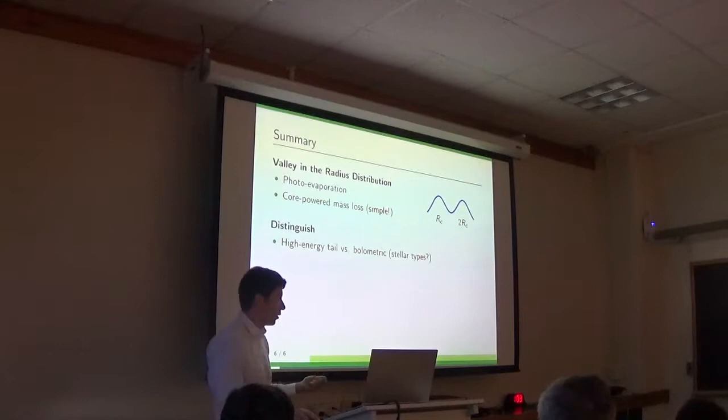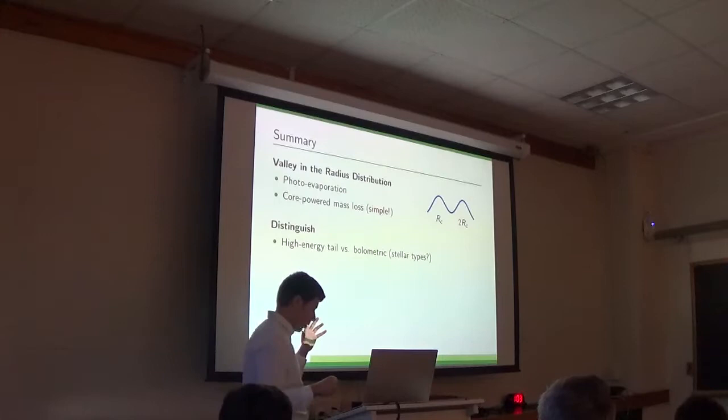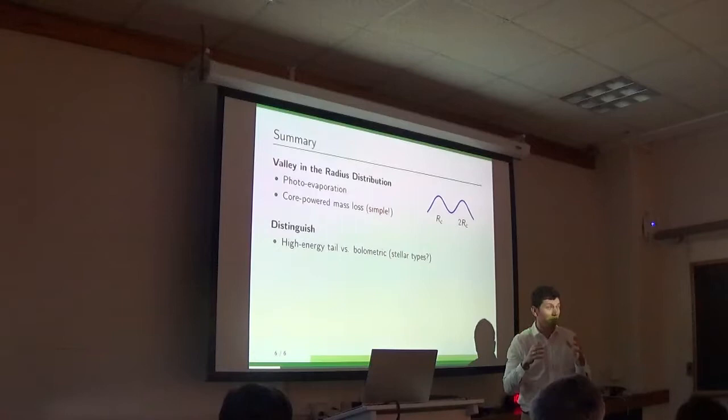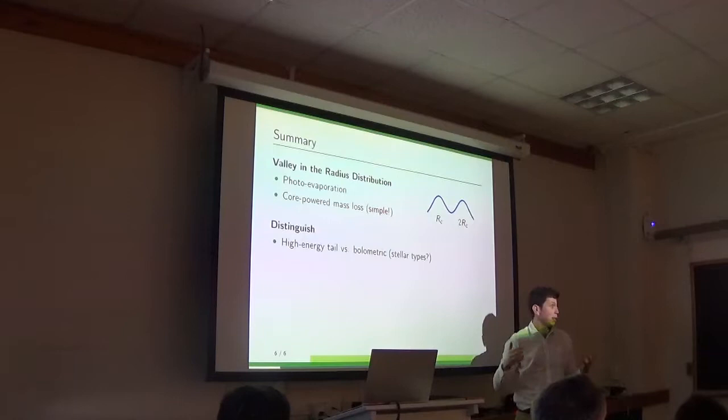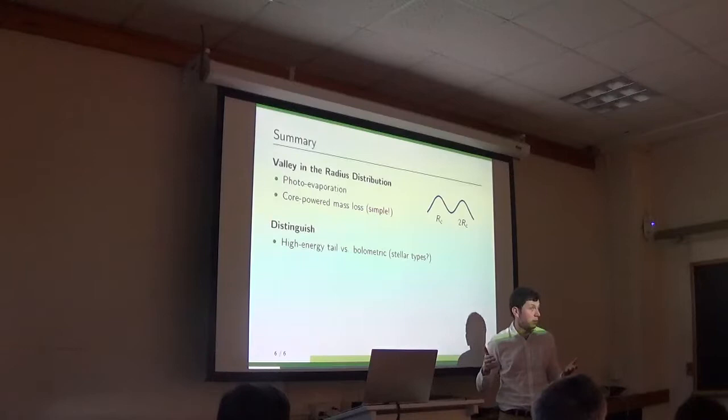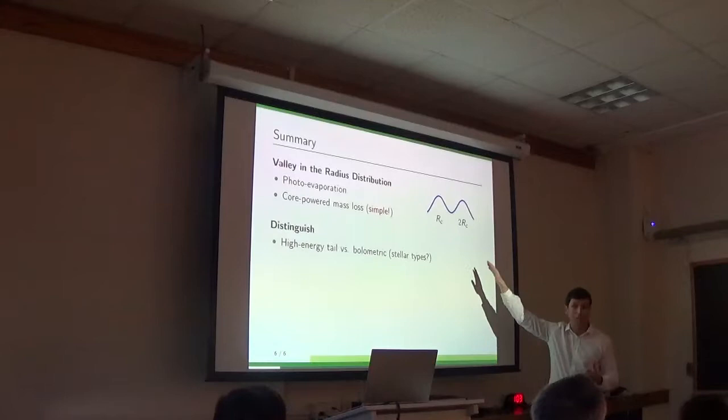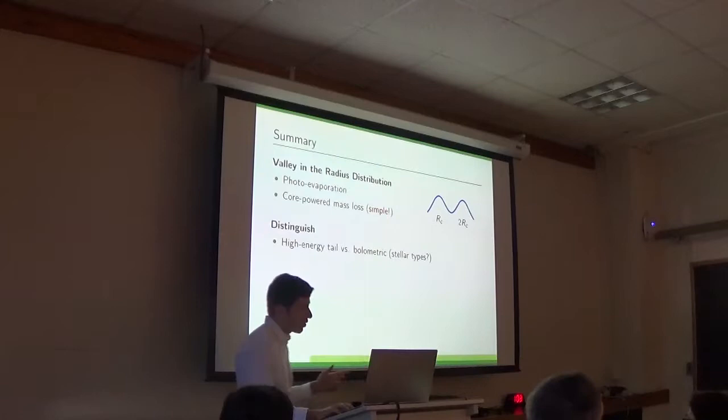The standard theory of what happened to these intermediate atmospheres is that they were photo-evaporated. But I suggested that they were lost due to the cooling luminosity of the planet's own rocky core, which is in my opinion a much simpler and more natural explanation. Now how do you distinguish between the two? So I'm suggesting to exploit the biggest difference between the two theories.